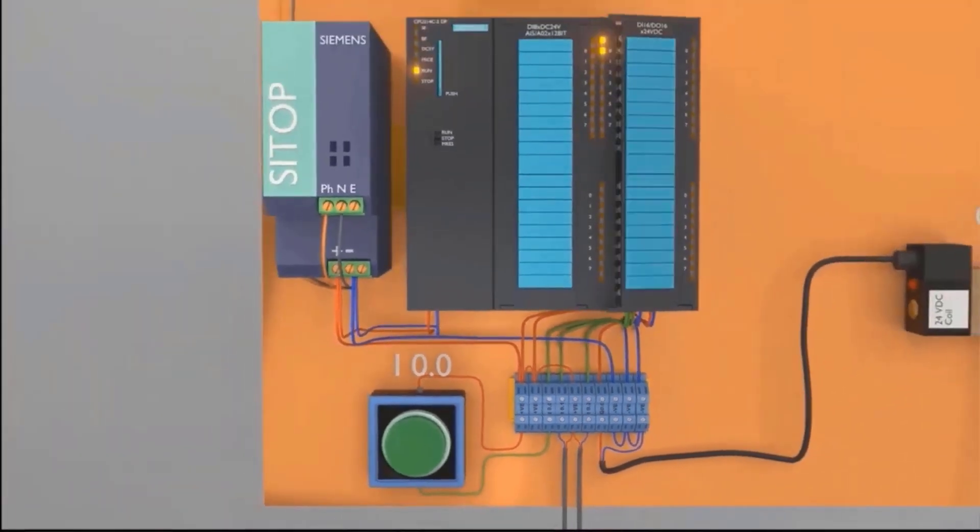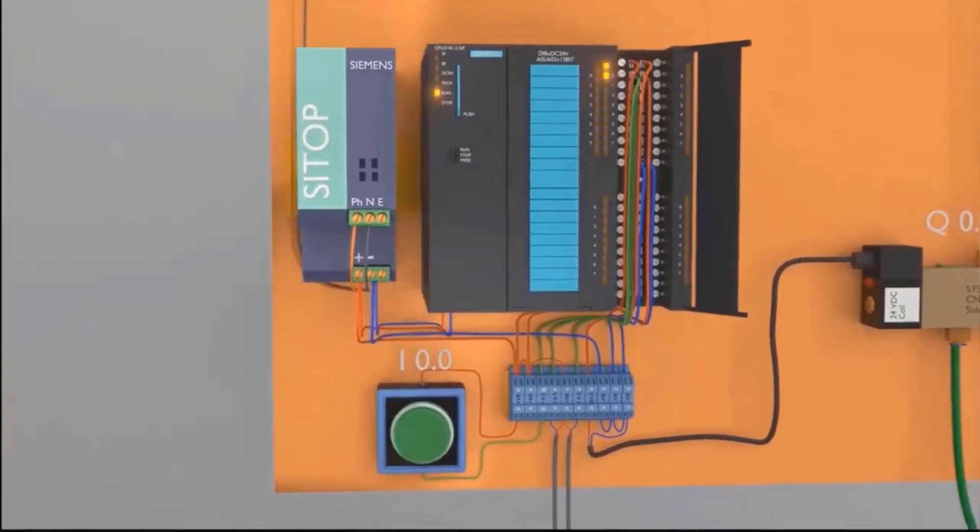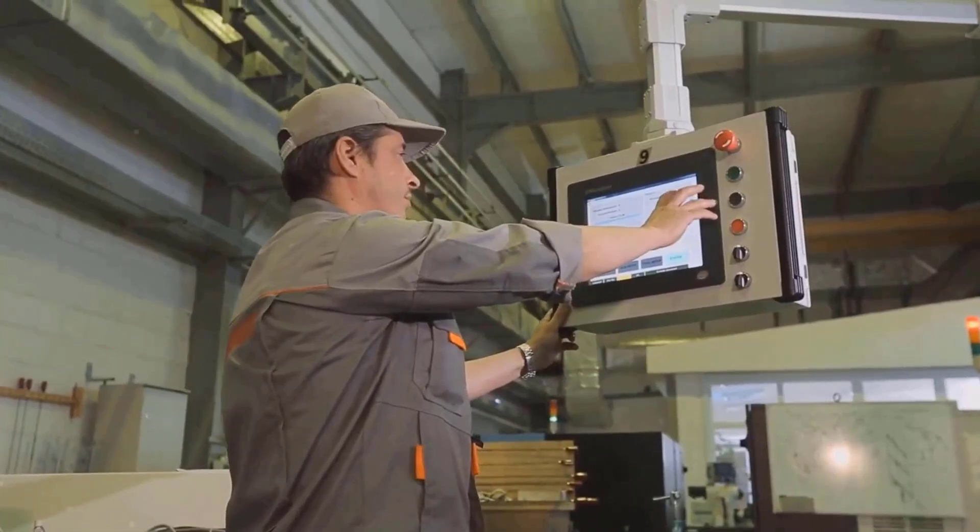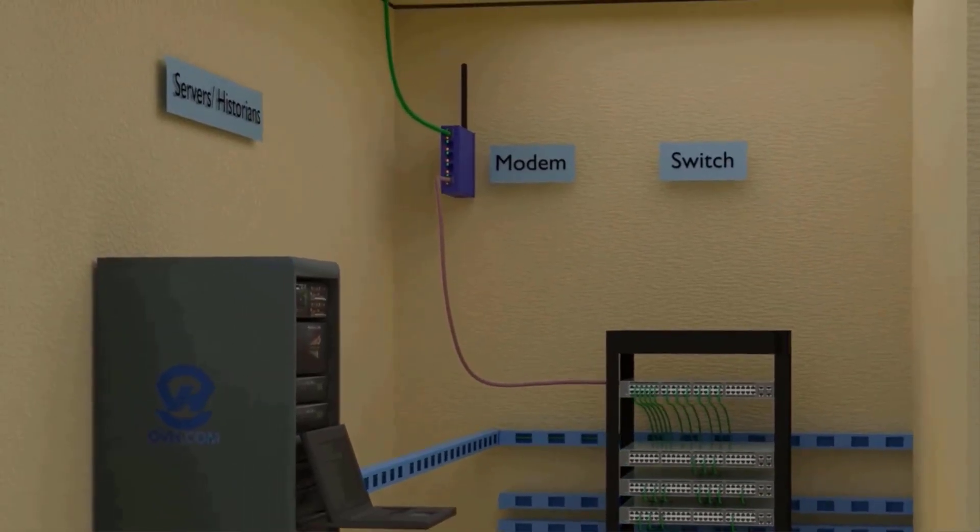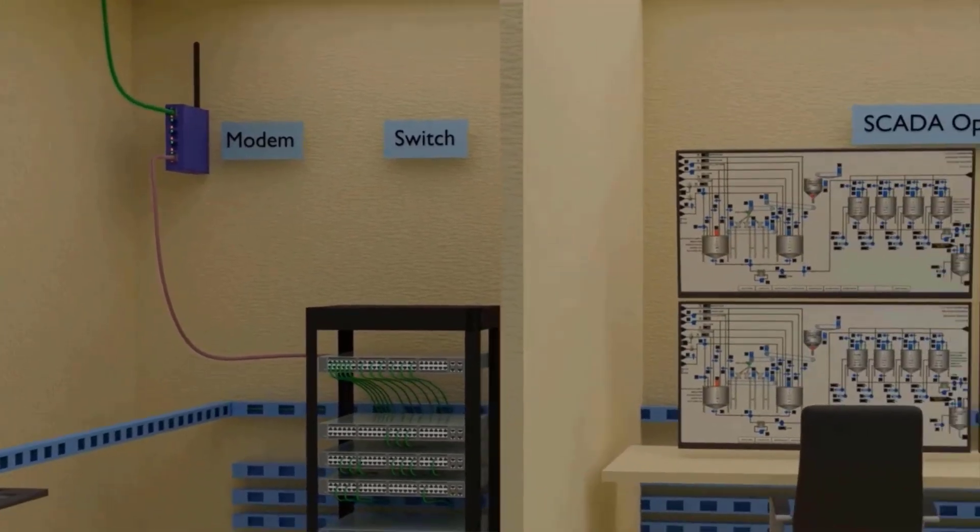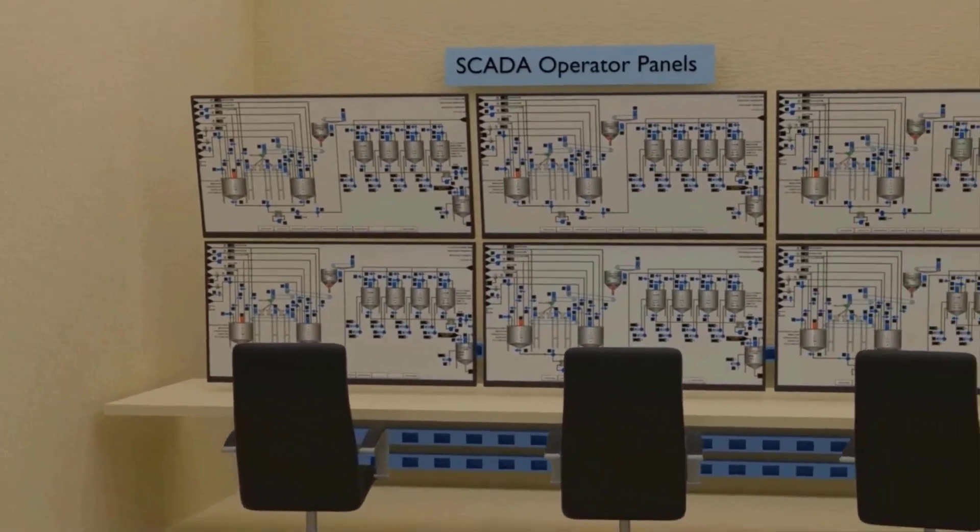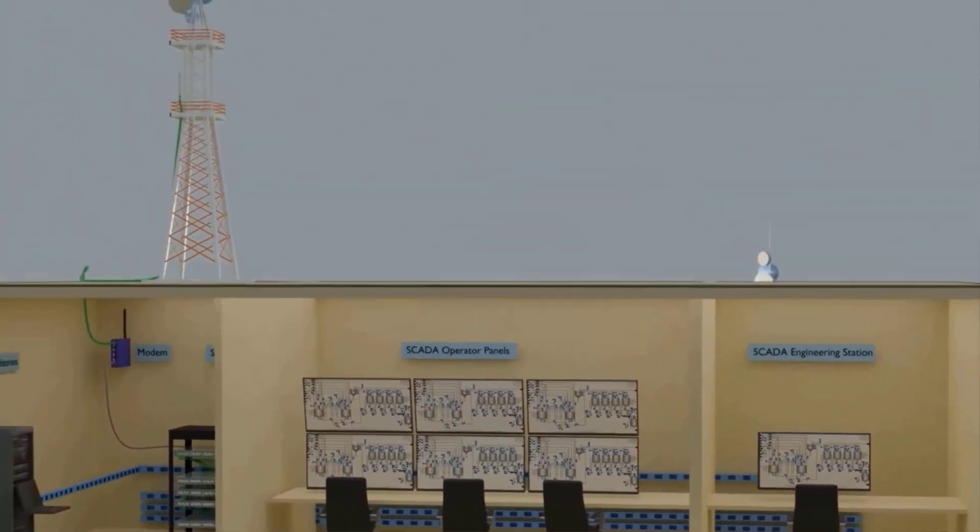PLC, or Programmable Logic Controller, is a robust industrial computer used for automation of electromechanical processes. SCADA, or Supervisory Control and Data Acquisition, is a system of software and hardware elements that allows industrial organizations to control processes locally or at remote locations.